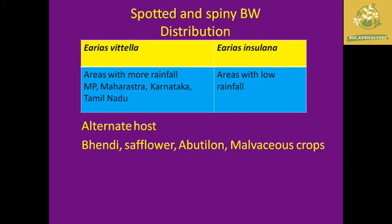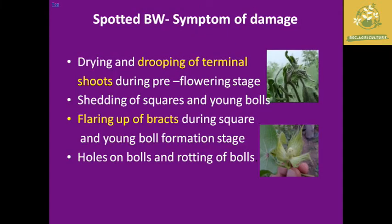The spotted boll worm's scientific name is Earias vittella and the spiny boll worm is Earias insulana. Earias vittella is more common in high-rainfall areas like Maharashtra, Madhya Pradesh, Karnataka, and Tamil Nadu, while Earias insulana is mainly found in low-rainfall areas. Alternate hosts of these Earias species include Bhindi, Safflower, Abutilon, and Malvaceae species.